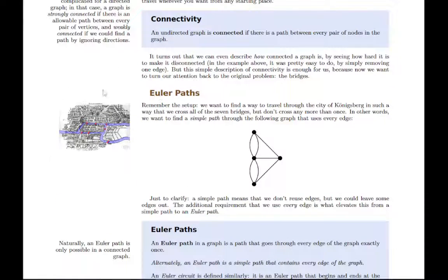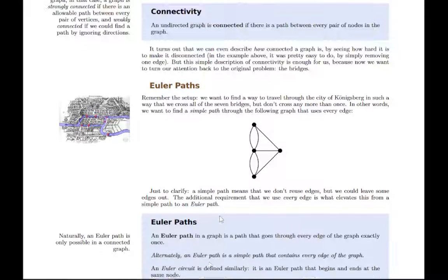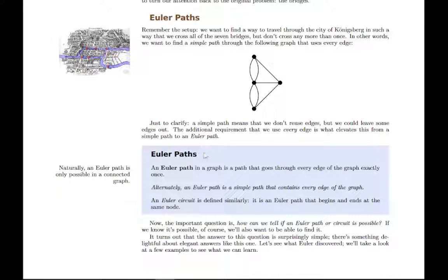Then we get to this question of Euler paths, which goes back to the Konigsberg bridge problem. If we want to find a simple path that uses every edge, we want to cross every bridge once and only once. So a simple path is one that doesn't reuse edges, but we also want it to use all of them. So we want to use all of them but not reuse any of them. So use them exactly once. That's an Euler path. So we're using each edge exactly once. That's the definition of an Euler path.